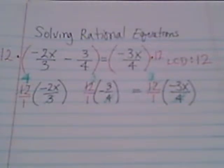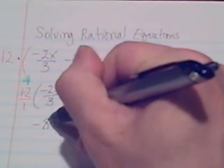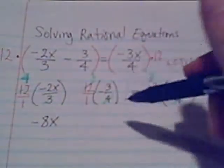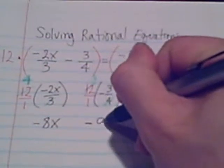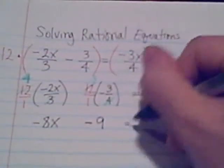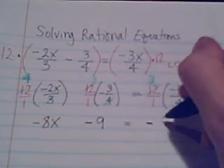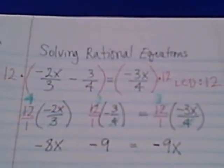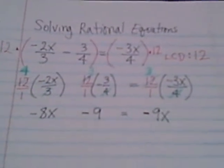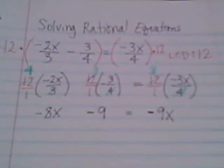From the first term, 4 times negative 2x is negative 8x. In the middle, 3 times negative 3 is negative 9. And after the equals, 3 times negative 3x is negative 9x. So there's our new equation: negative 8x minus 9 equals negative 9x. It's a lot cleaner - there aren't fractions like in the initial equation.